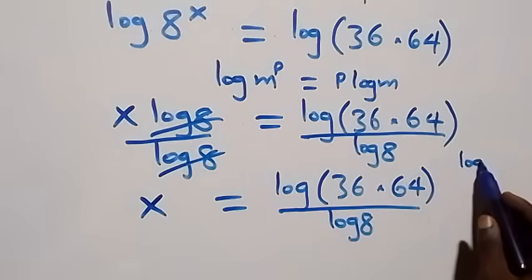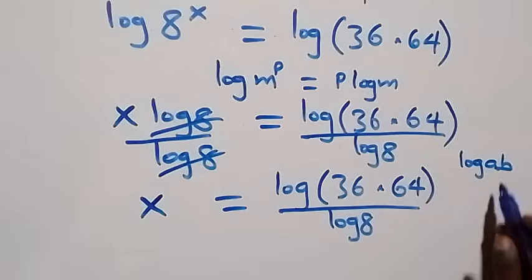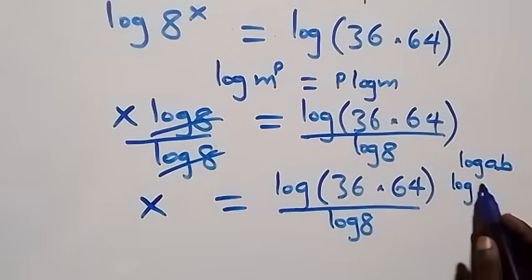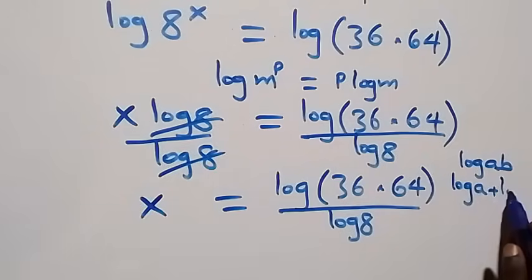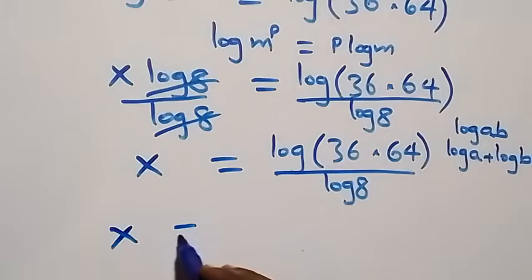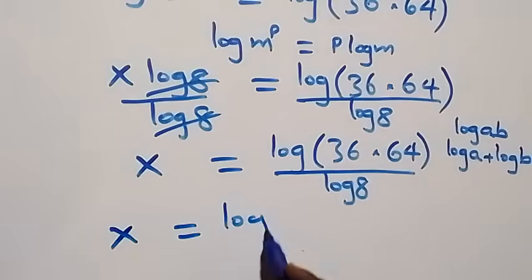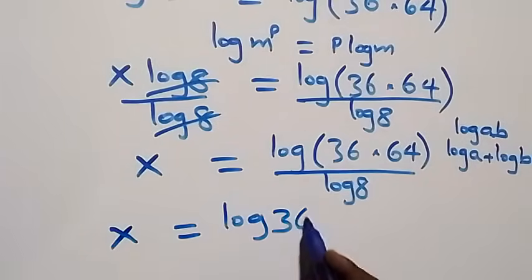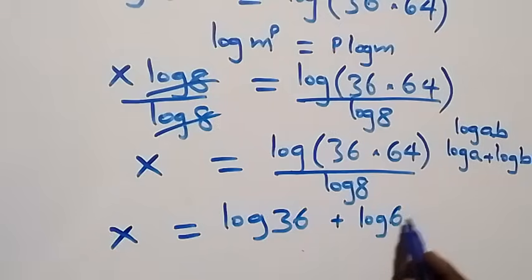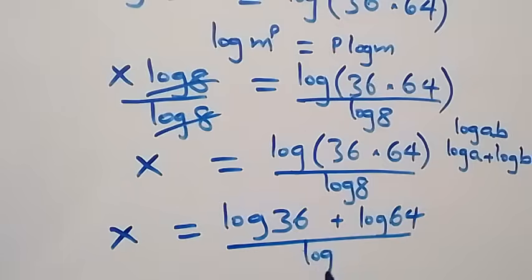This follows the log product rule: when we have log a times b, this can be written as log a plus log b. So here we have x equals log 36 plus log 64, then over log 8.